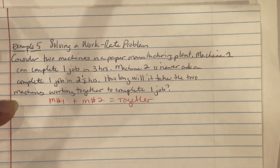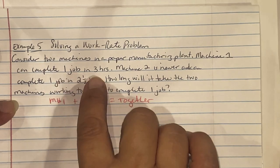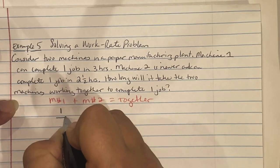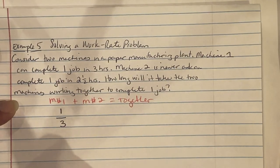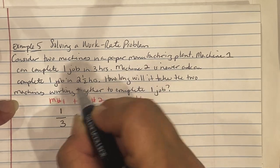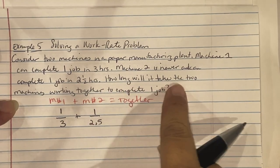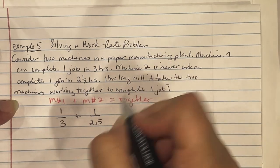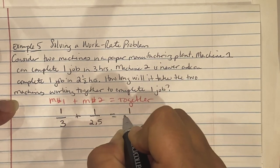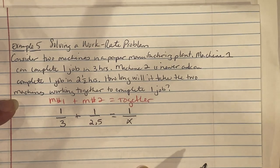Machine 1 can do one job in 3 hours. Machine 2 can do the same job in 2.5 hours. They want us to find how long it's going to take if both machines are working at the same time together. So the same job, one job together, which we don't know, that's why it's X. So in this instance we need to find an LCD.